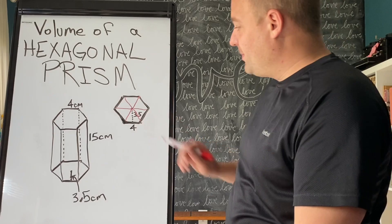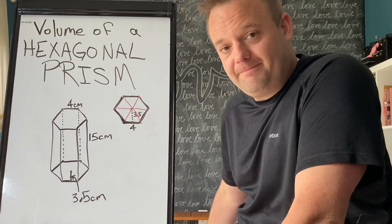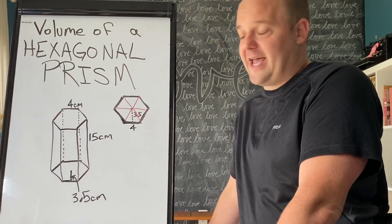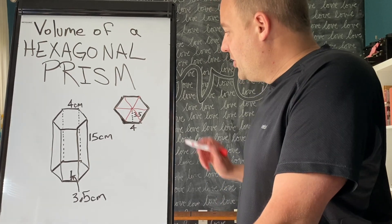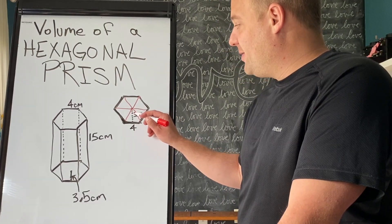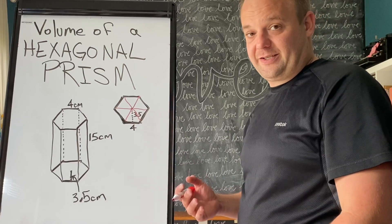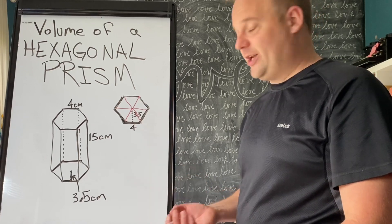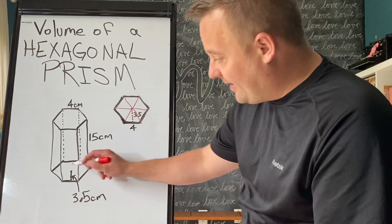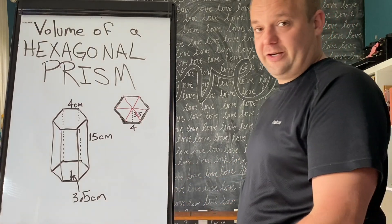So 4 times 3.5 is 14, and then 14 divided by 2 is 7. The area of one triangle is 7, but we have 6 of them. So 7 times 6 is 42.